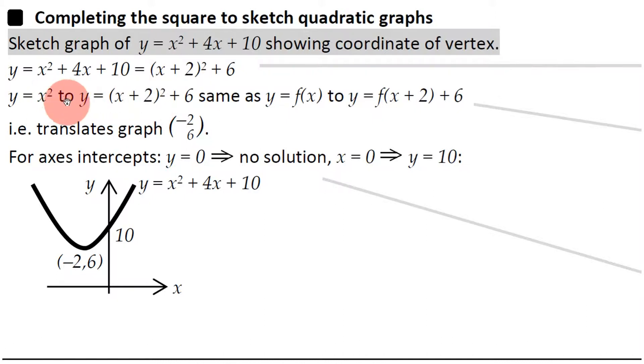So instead of x squared, you've got (x+2) squared, which is equivalent to going from f(x) to f(x+2). Because if you change the x, that's like changing inside the function, as I've talked about in my earlier video which introduces functions.